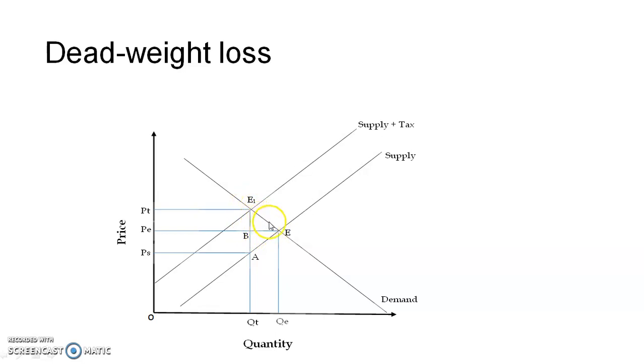This portion is called loss of consumer surplus. Earlier the consumer surplus was above B, E and E. Now this is the loss of consumer surplus due to taxation. That is B, E, E1.